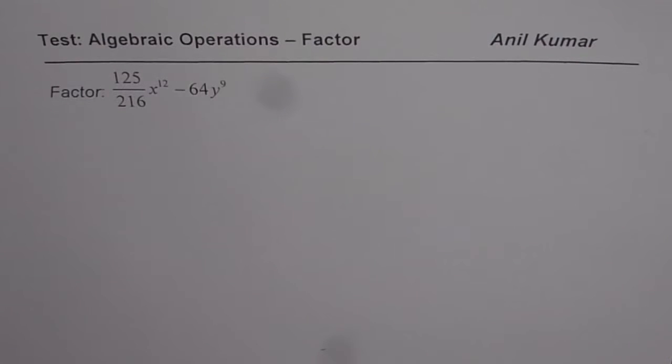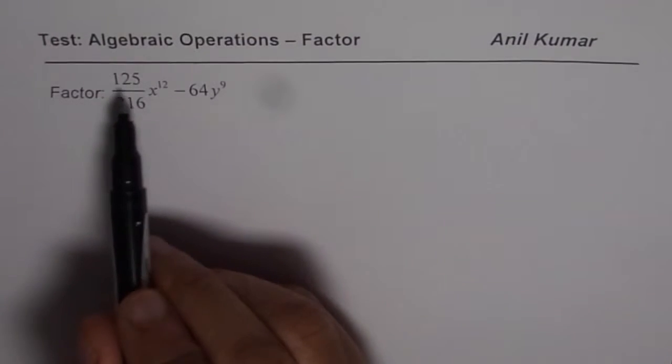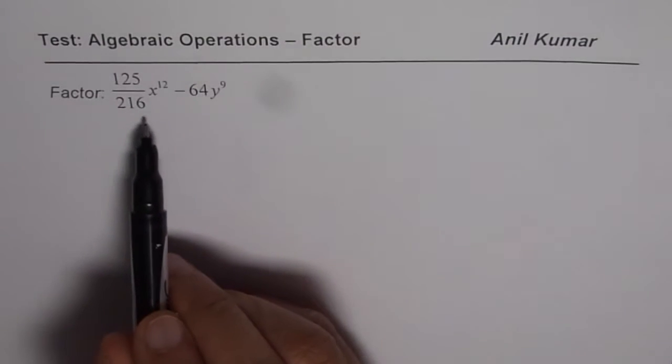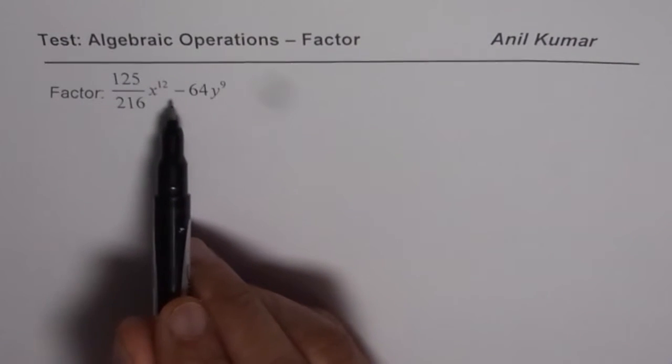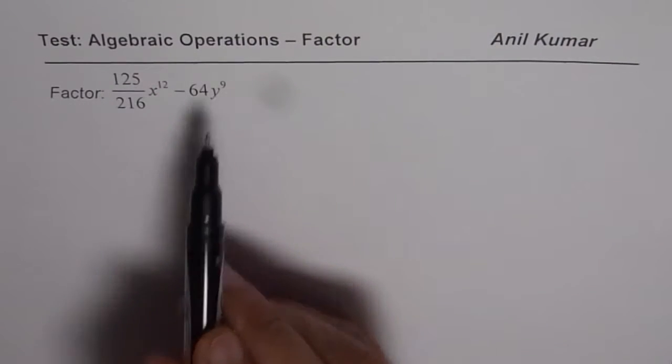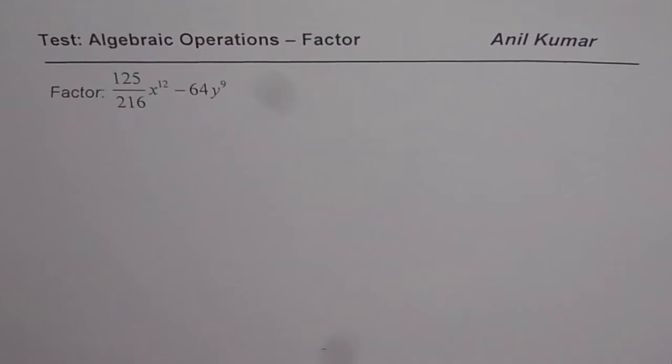I'm Anil Kumar and here is a practice test question on factoring. We are given 125 over 216 times x to the 12 minus 64y to the power of 9. We need to factor this.